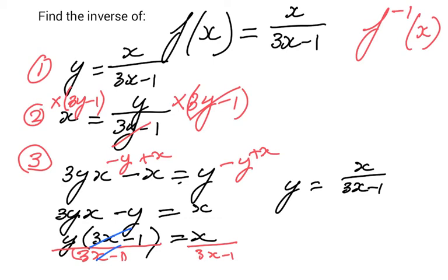All right, and that is the inverse. So f inverse of x equals x over 3x minus 1. Now in this particular case, the inverse function is indeed the same as the original function, and sometimes that is the case. So don't worry too much about that.